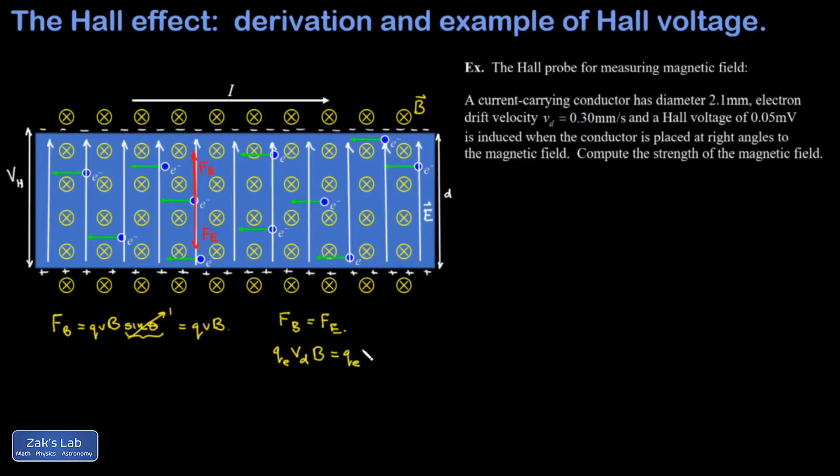Our electric force is given by the magnitude of the charge times the strength of the electric field. When I have a constant electric field, there's a relationship between the voltage and the distance: the electric field is V over d. Canceling our charges and solving for the Hall voltage, I arrive at a simple formula: V_H = v_d·B·d.